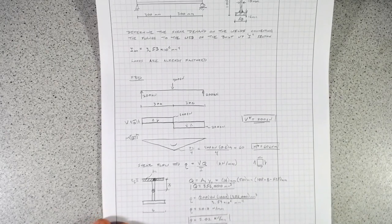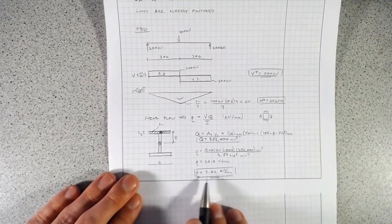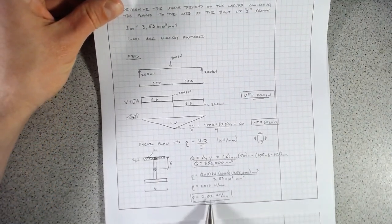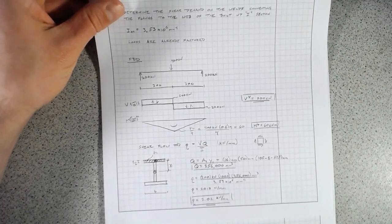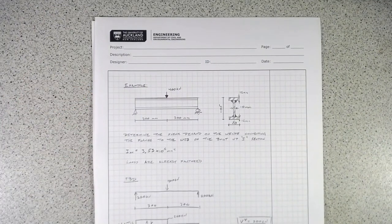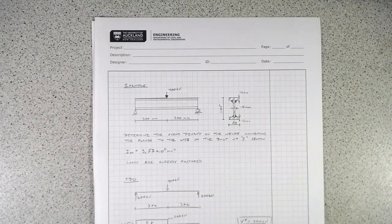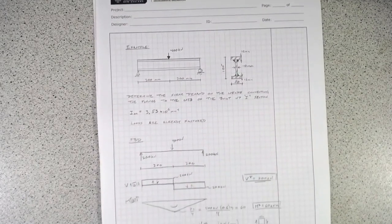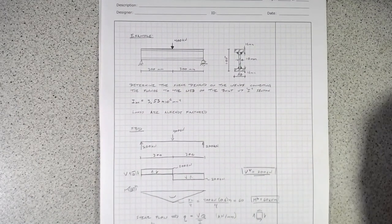That means that for every millimeter of length along this beam, that weld needs to take, for every millimeter of weld length, we need to be able to resist just over 2 kilonewtons. So that's a short example just showing how we can use shear flow to determine what our loading is on our welds. This is particularly important when we have these compound and built-up sections like that. Thanks for watching.